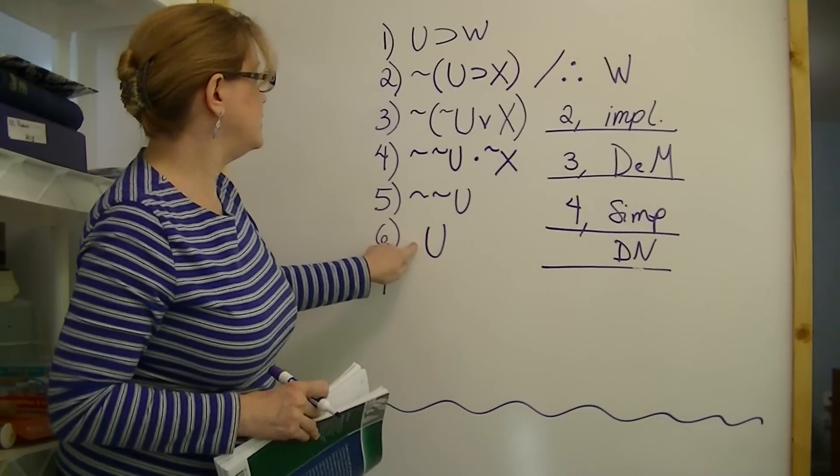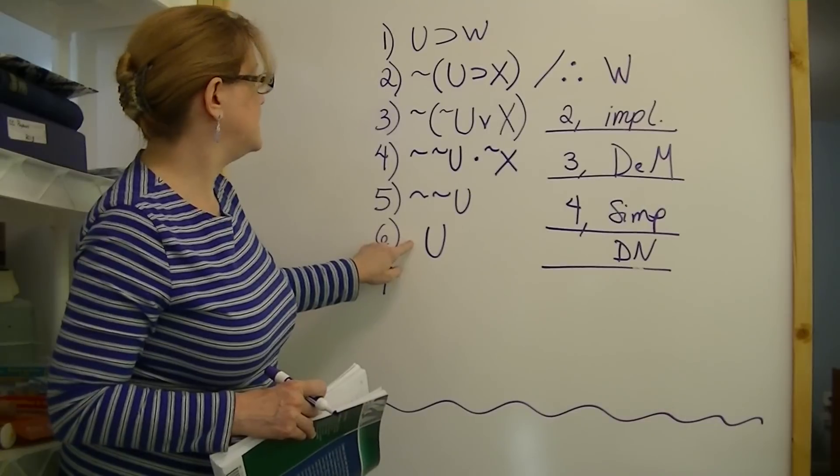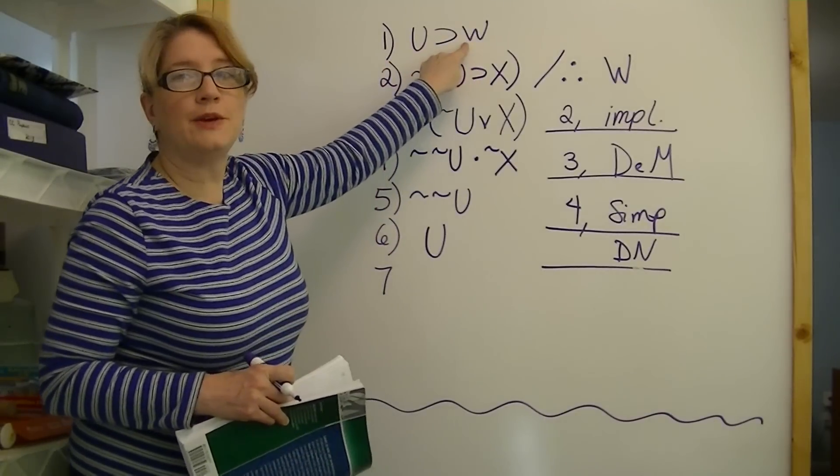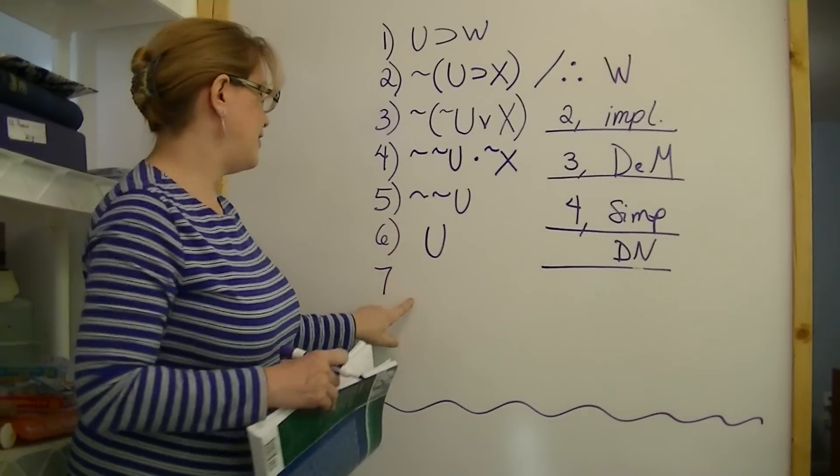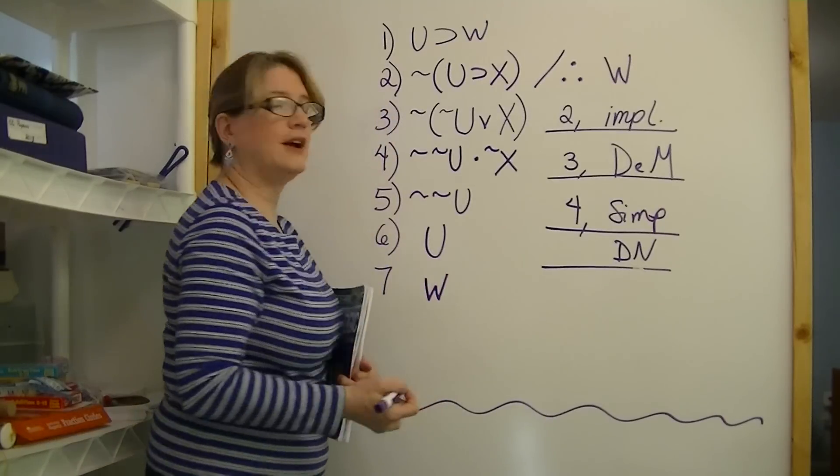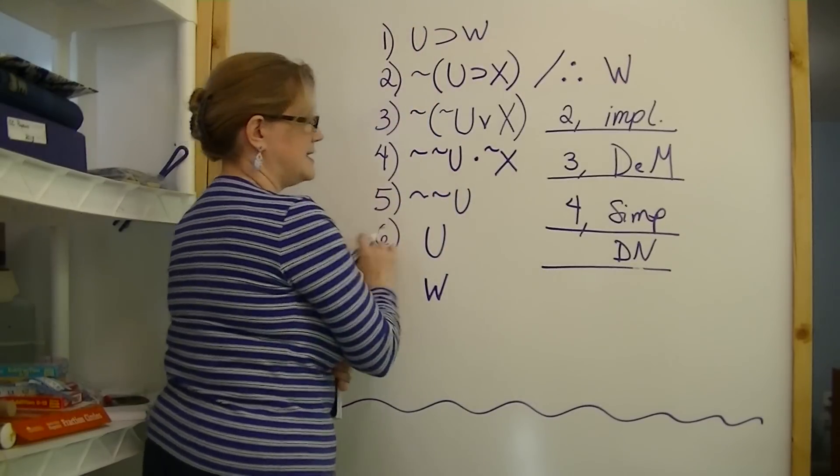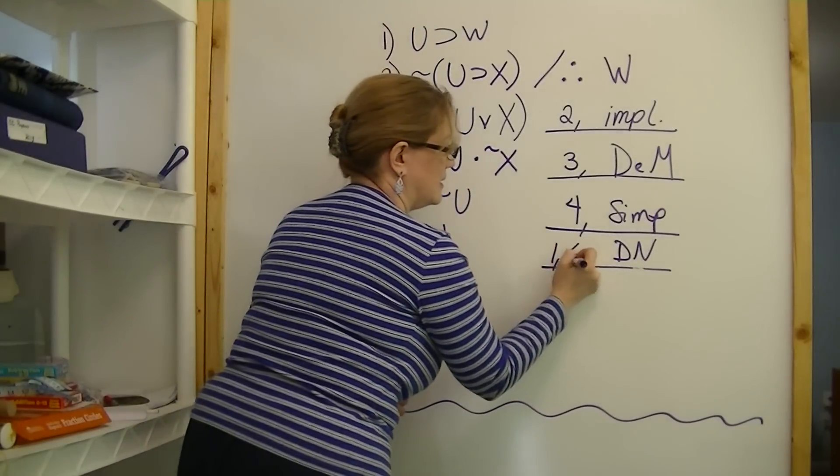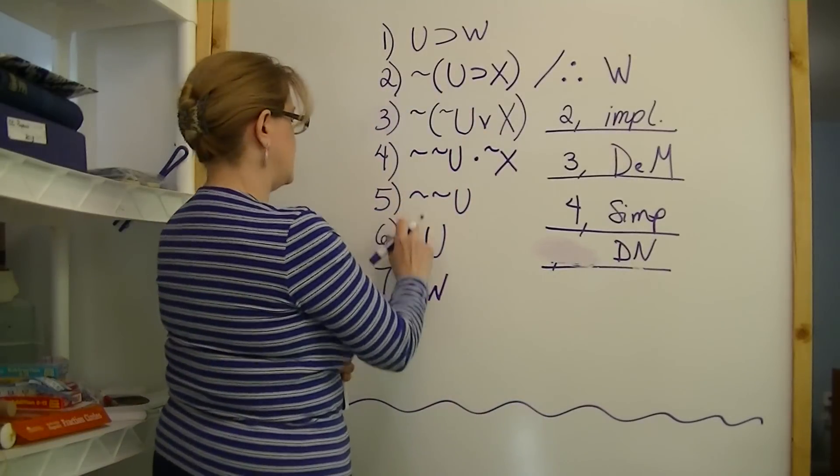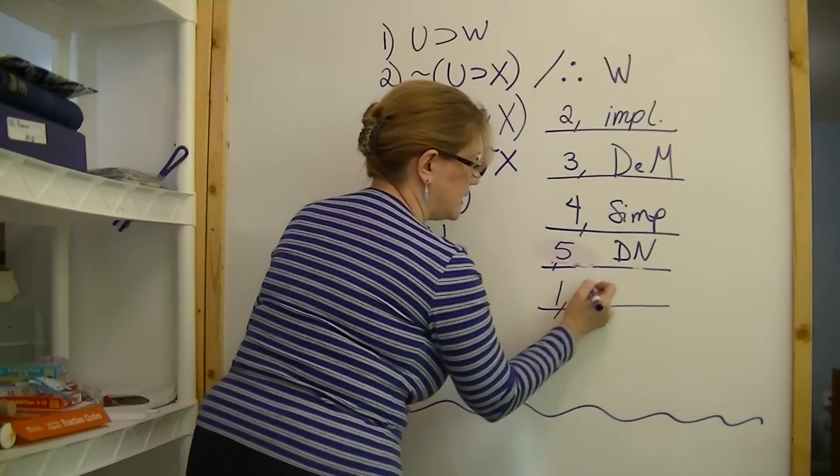The next thing to do is to change this. So it means the same thing. We'll use a rule of replacement called double negation. And you probably were shouting that out before I even said it. And this becomes a U. Now we have what we need. We have implied U from using these rules of replacement.